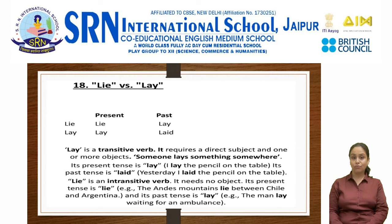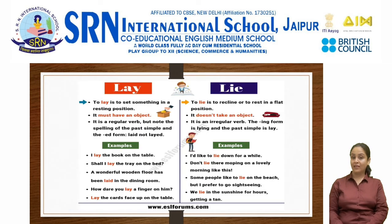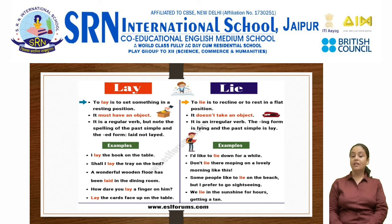Let's revise through this image. To lay is to set something in a resting position — it must have an object. It is a regular verb, but note the spelling of the past simple: it is L-A-I-D (laid), not L-A-Y-E-D. Examples: I lay the book on the table. Shall I lay the tray on the bed? A wonderful wooden floor has been laid in the dining room. How dare you lay a finger on him? Lay the cards face up on the table.